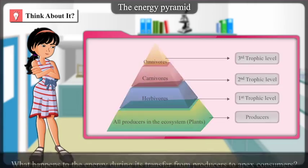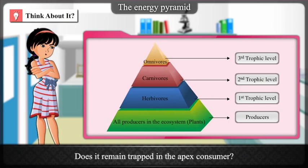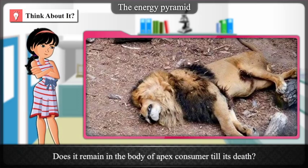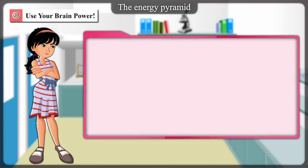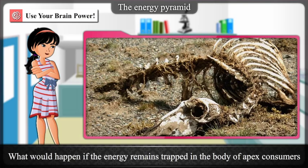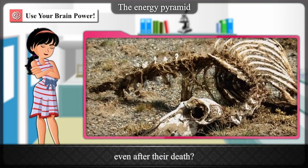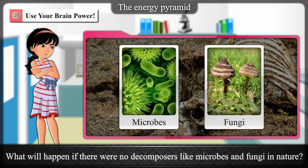Think about it: What happens to the energy during its transfer from producers to apex consumers? Does it remain trapped in the apex consumer? Does it remain in the body of the apex consumer till its death? What would happen if the energy remains trapped in the body of apex consumers even after their death? What will happen if there were no decomposers like microbes and fungi in nature?